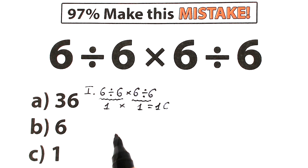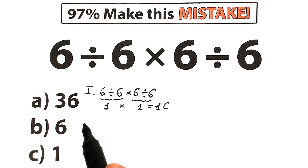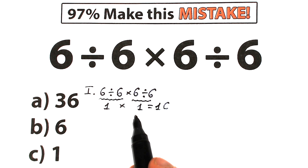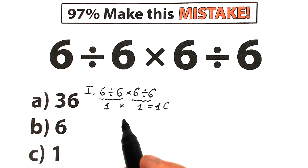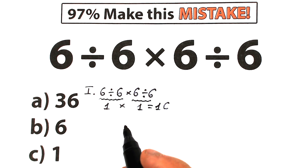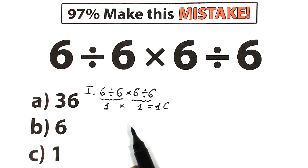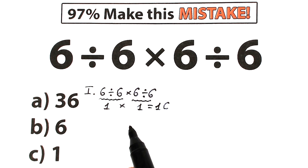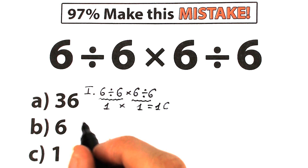A lot of students solve this question like that, and this solution does take place, but I want you to understand that in math we can't solve our challenges randomly. We should know the correct order to do this problem, because obviously whatever order of operation we select is going to create a different answer. So we need to understand what is the correct order.